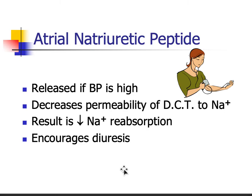The opposite of aldosterone is atrial natriuretic peptide. If your blood pressure is high, this hormone is released to decrease your blood volume and thus decrease blood pressure. Specifically, it decreases the permeability of the distal convoluted tubule — that region is no longer able to absorb as much sodium. If you don't absorb as much sodium, you don't get as much water reabsorbed, so blood volume drops, blood pressure drops. This is a diuretic effect — more water goes into the urine.